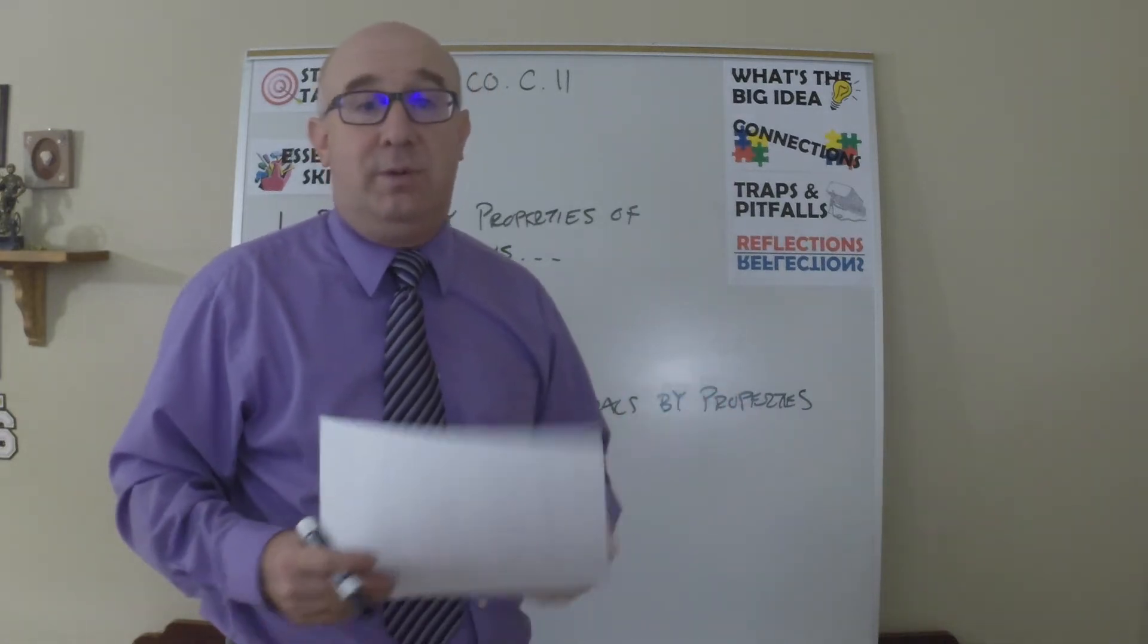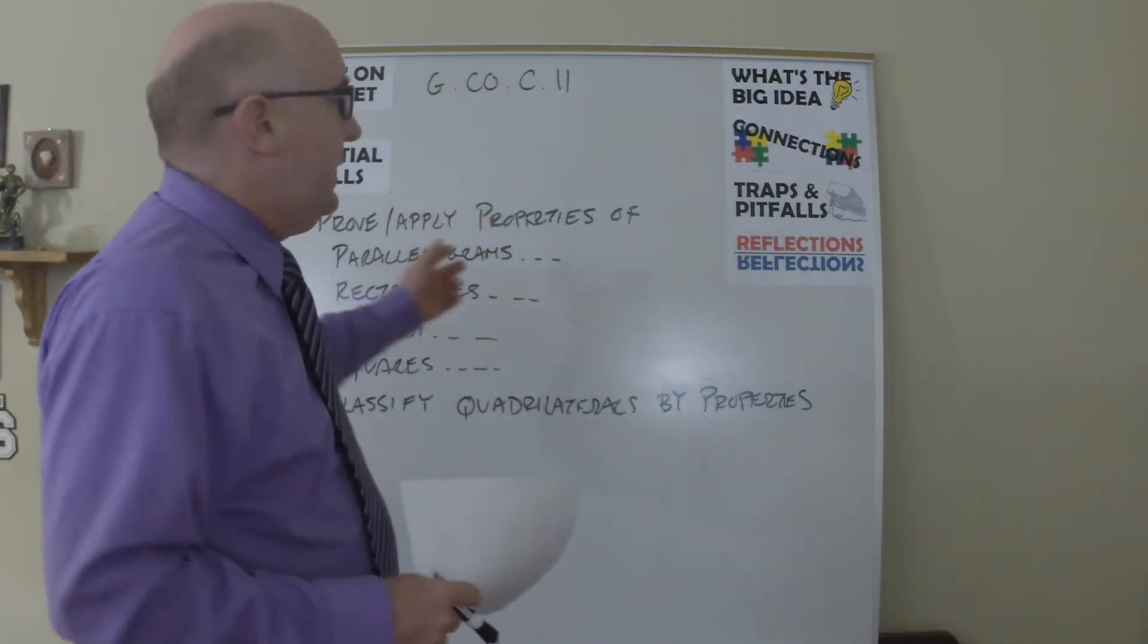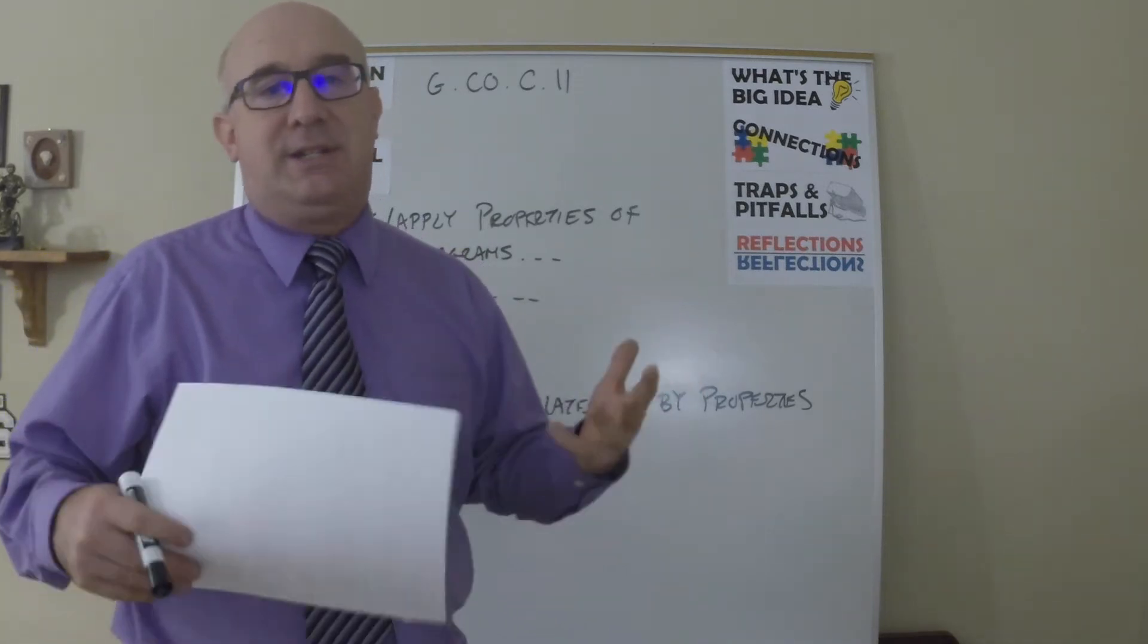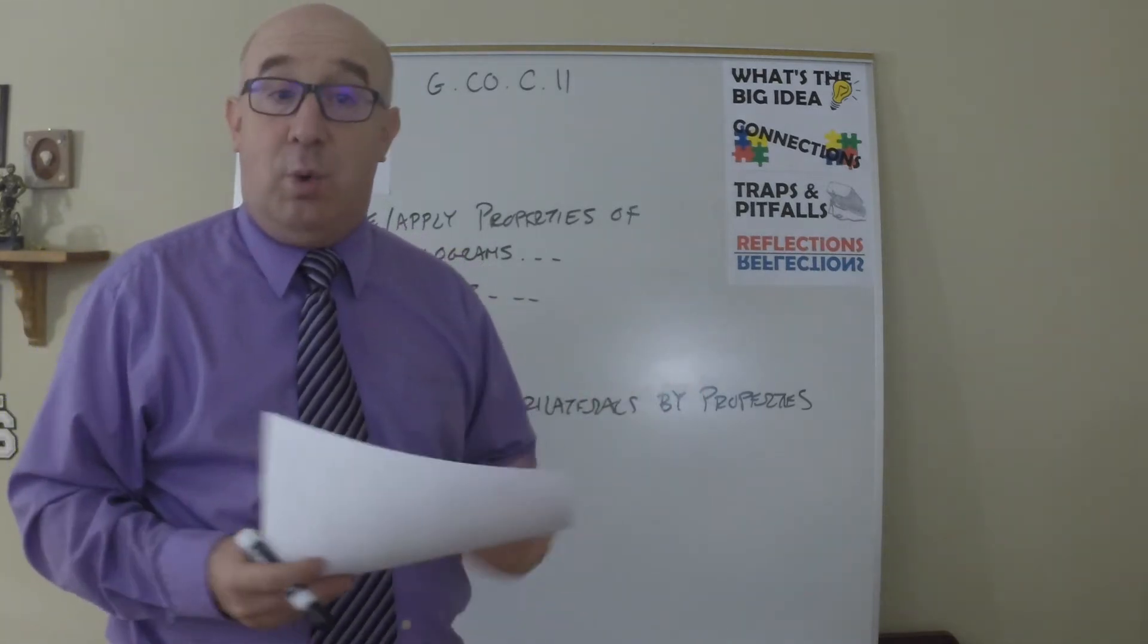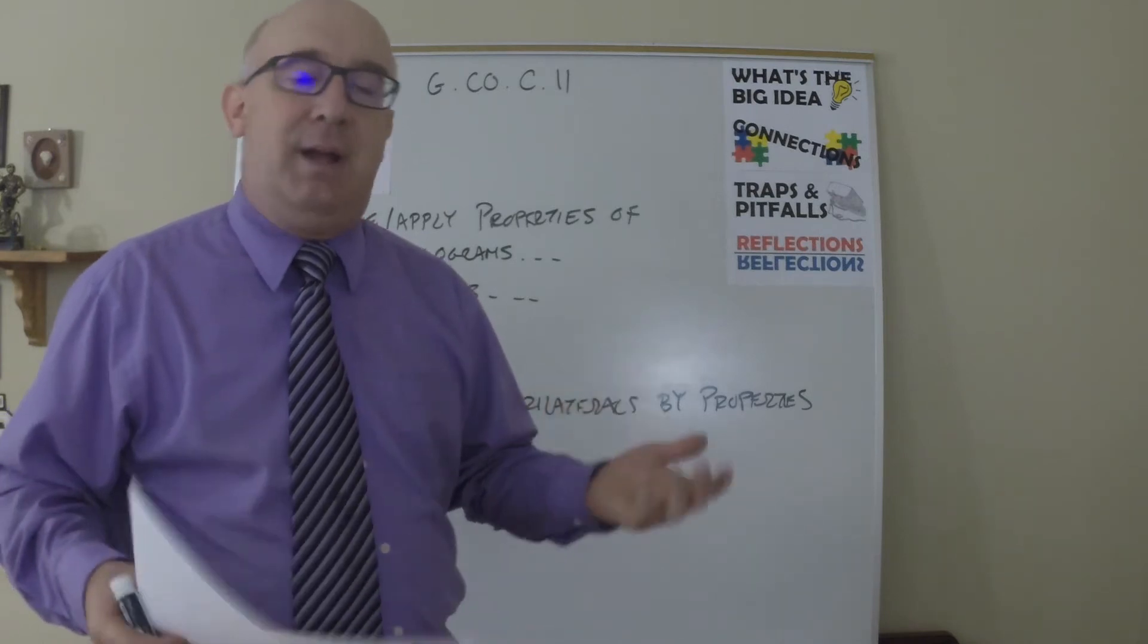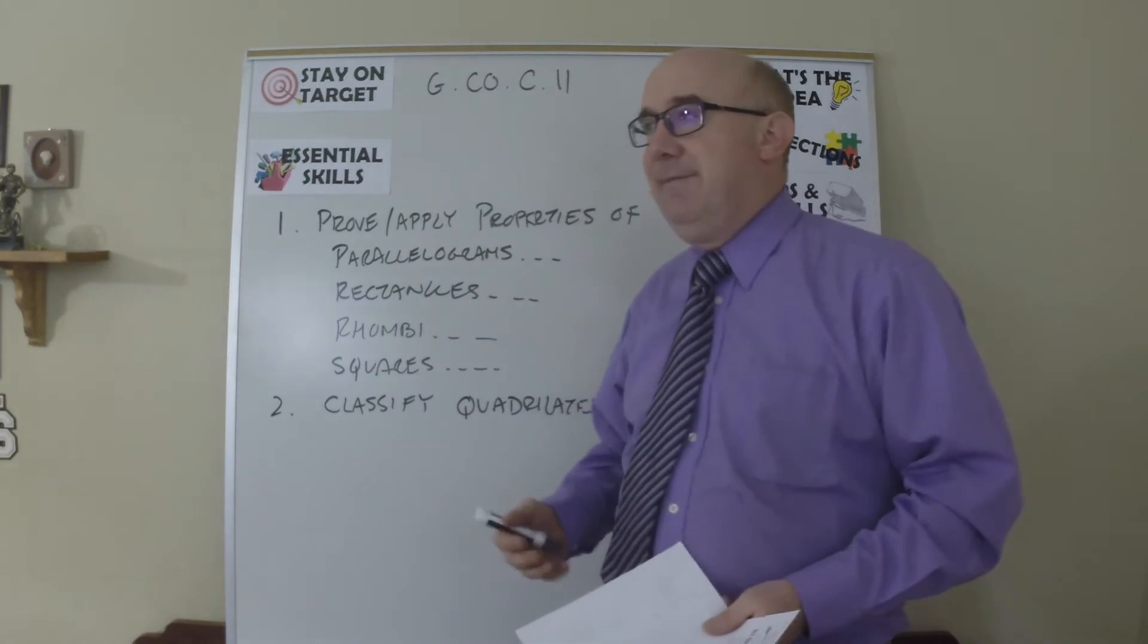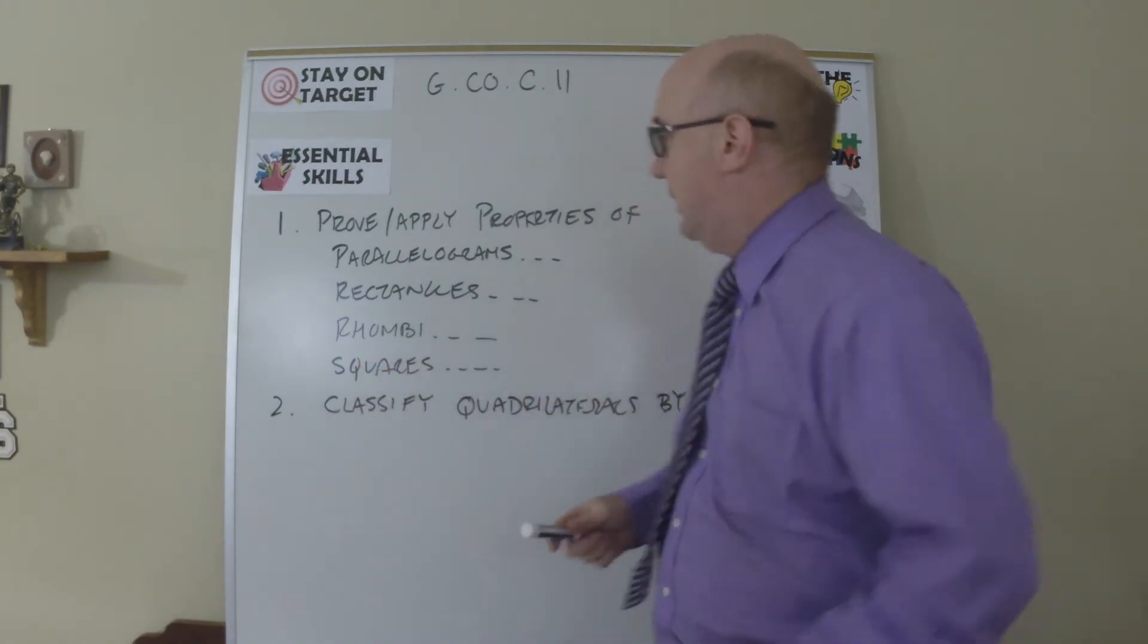A very normal progression that we've always done in geometry. In here we're basically proving facts, properties, characteristics about our quadrilaterals and then applying and using those items to establish finding lengths and angles and things like that.